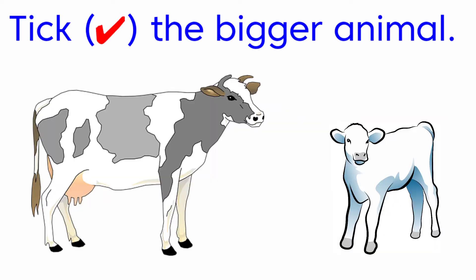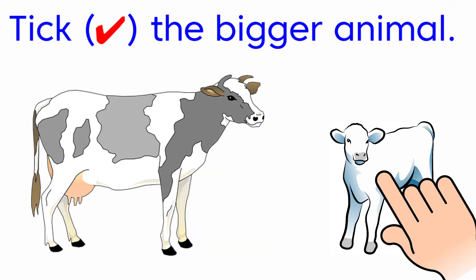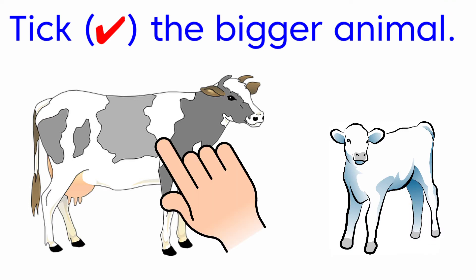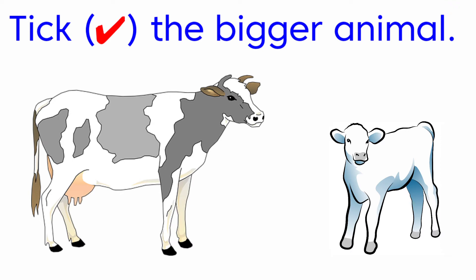Next one, tick the bigger animal. Here they have given a cow and a calf. Among these 2, which is big? Cow is big. And which is small? Calf is small. Here the cow is big, so we are going to put a tick for the picture. Cow.